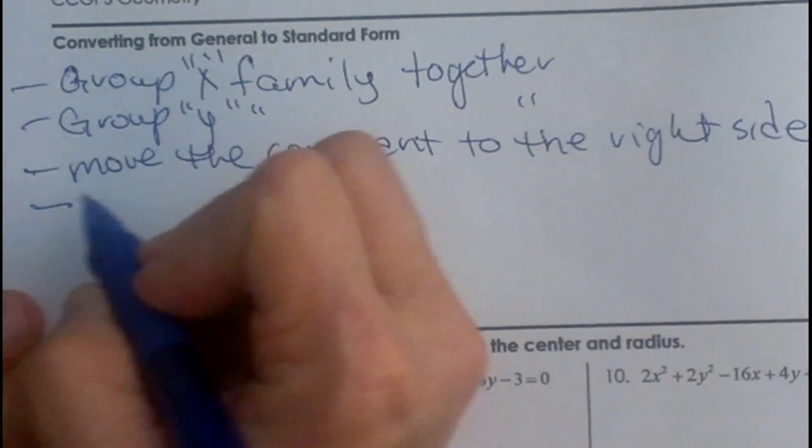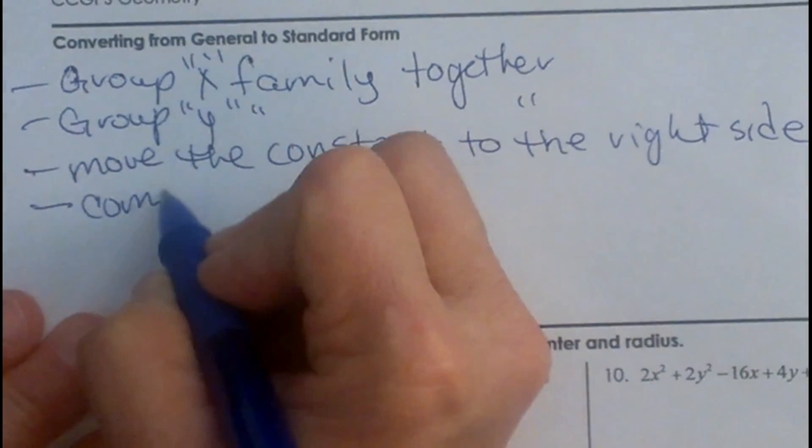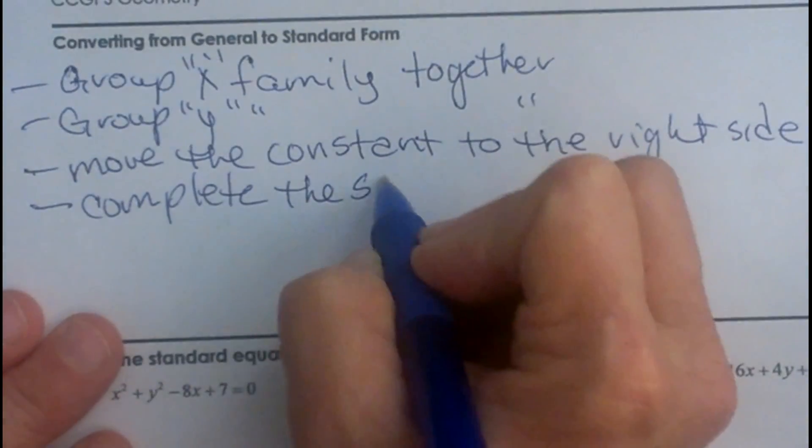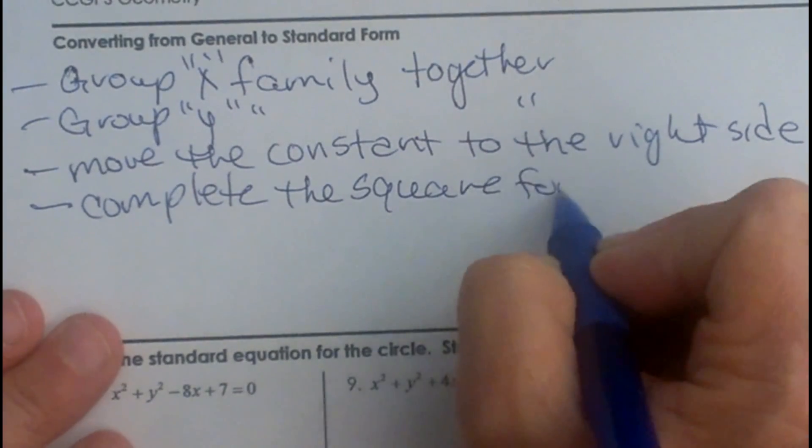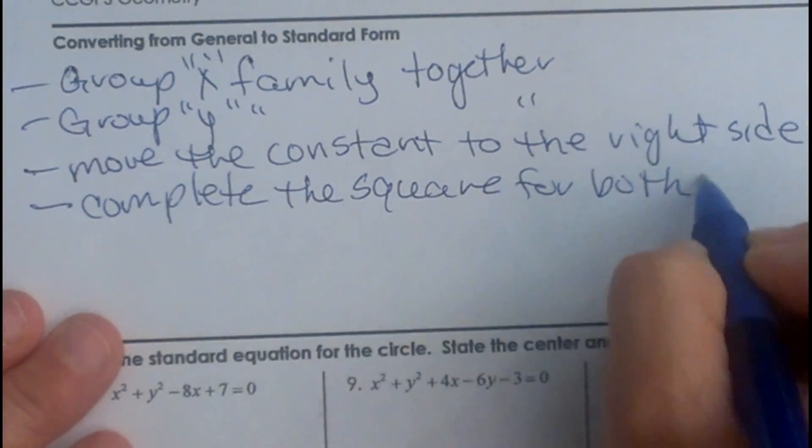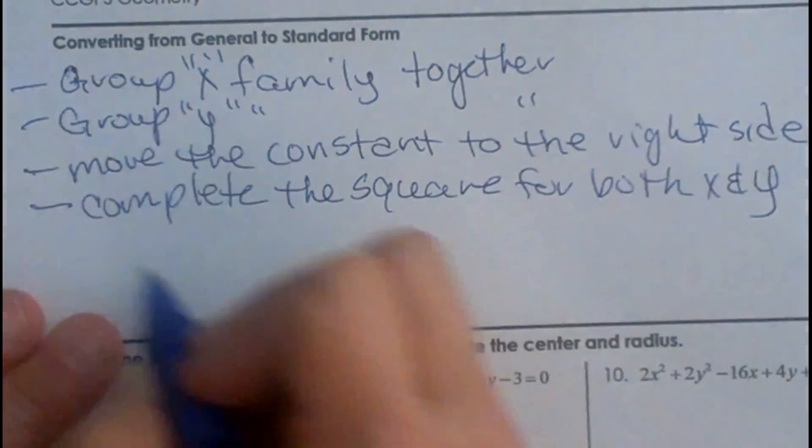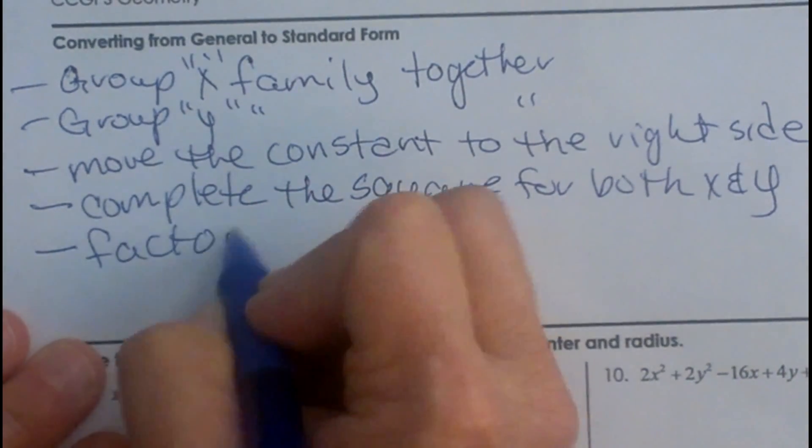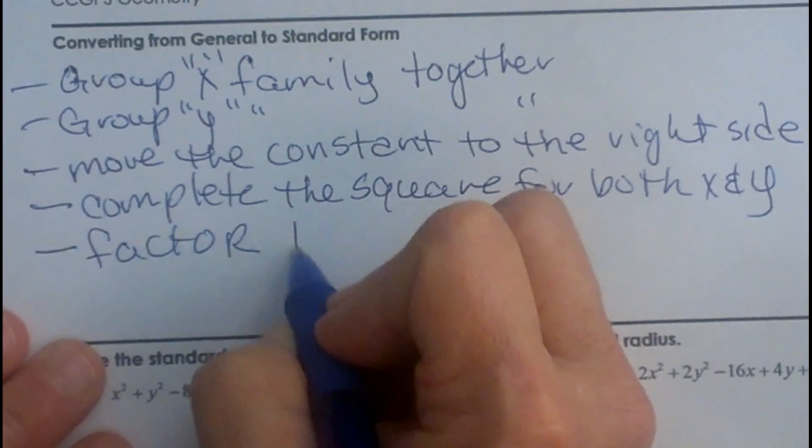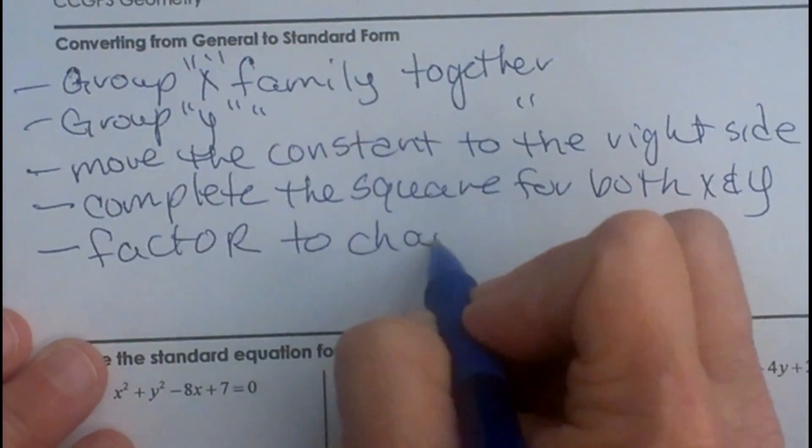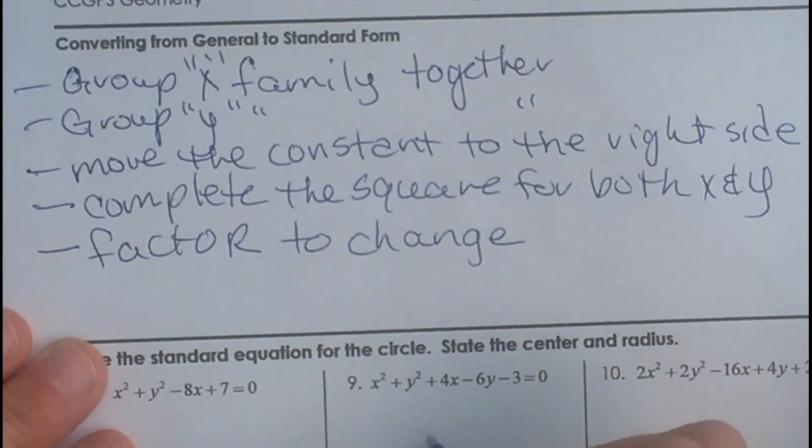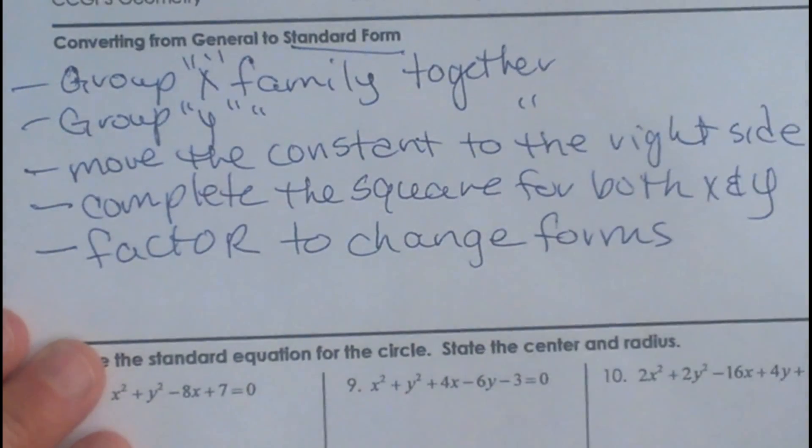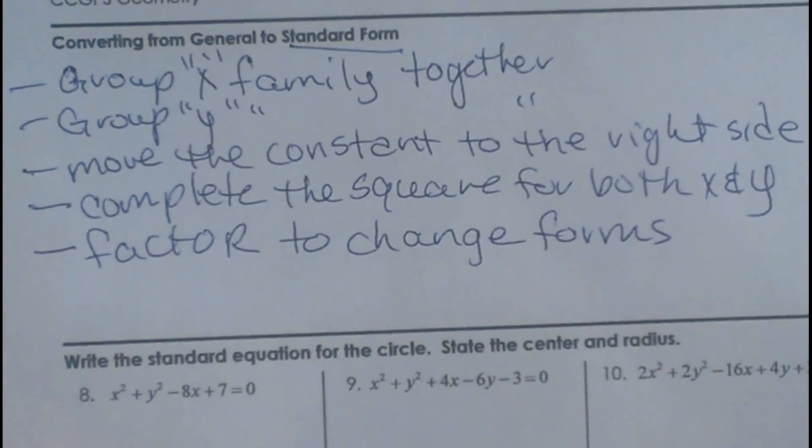Then we are going to complete the square for both x and y, and then we will factor to change the form, to put it in that standard form. It sounds like a lot but once you do it a couple times it is really pretty easy.